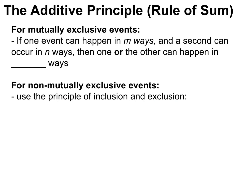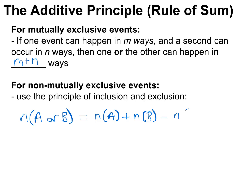To summarize: for mutually exclusive events, if one event can happen in m ways and a second in n ways, then one OR the other can happen in m + n ways — OR tells you to add. For non-mutually exclusive events, use the principle of inclusion and exclusion: the number of ways A or B can happen equals the ways A can happen, plus the ways B can happen, minus the ways A and B both happen, to prevent double counting.